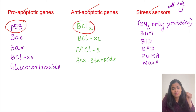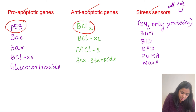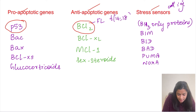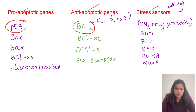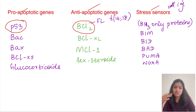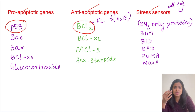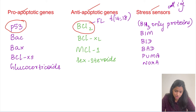The most important anti-apoptotic gene is BCL2. Others include BCL-XL and MCL1; sex steroids are also anti-apoptotic. BCL2 is implicated in follicular lymphoma via translocation t(14;18), where chromosome 18 carries BCL2 and its upregulation is present. Since BCL2 is anti-apoptotic, its upregulation prevents follicular lymphoma tumor cells from dying — it prevents apoptosis, causing BCL2 overexpression.